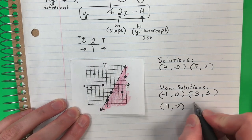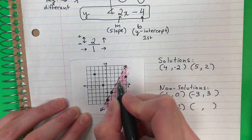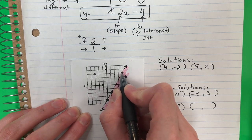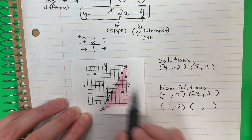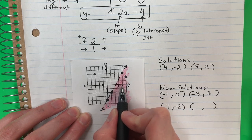1, negative 2. Another point, un otro punto, just for practice, para practicar, could be this point right here. Do you see this one in the corner? It's on a dashed line. Es sobre una línea dashed. So non-solution, this would be 4, 3.